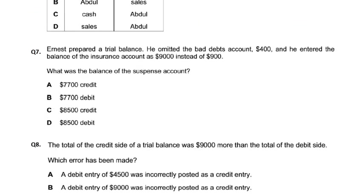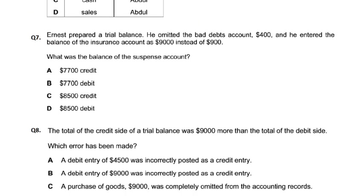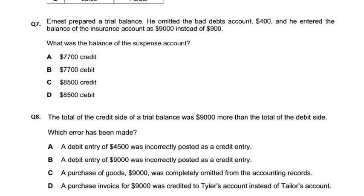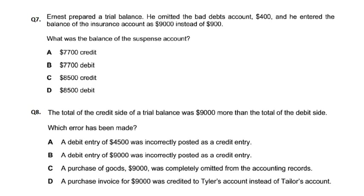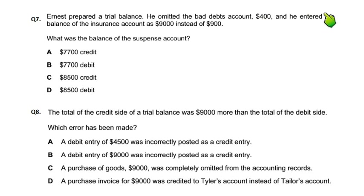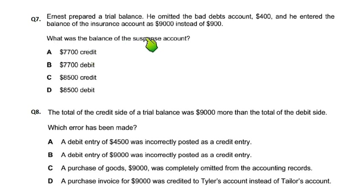Question number 7. Ernst prepared a trial balance. He omitted the bad debt account of $400 — he forgot to put bad debt in the trial balance — and he entered the balance of the insurance account as $9,000 instead of $900. We need to find out what was the balance on the suspense account.